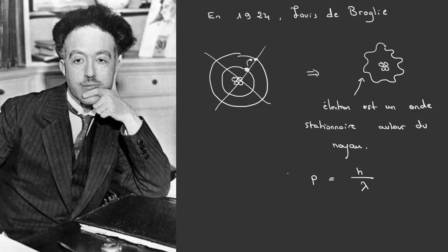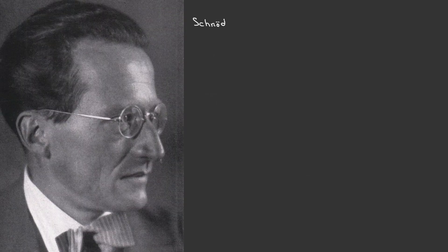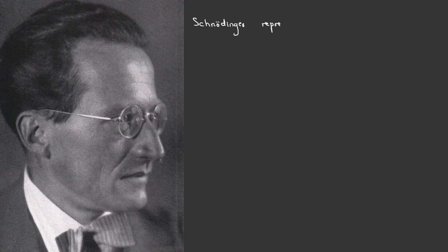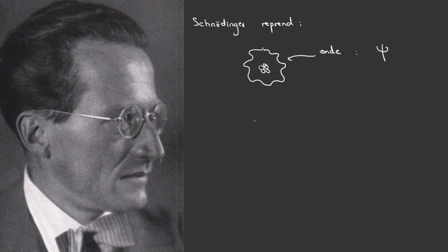In 1926, Erwin Schrödinger revisited this idea to reformulate a mathematical description of quantum mechanics. He proposed that the electron be represented not as a point-like particle, but as a standing wave around the nucleus. This wave is described by a complex mathematical function called a wave function, which contains all the information about the particle.